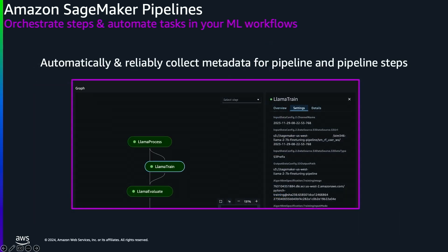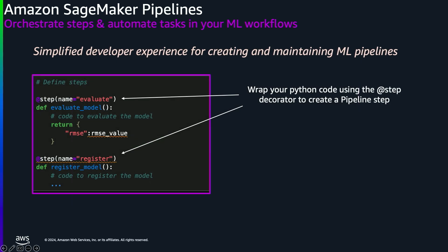Pipelines can be visualized within Studio, and incorporating fine-tuning steps into a pipeline workflow allows SageMaker Pipelines to reliably capture key metadata about not only the pipeline itself but also the steps within it. One key benefit is the more recent release of our simplified developer experience for pipelines, which enables developers to more easily create pipelines through the use of a new step decorator. This allows you to wrap your Python function code using the step decorator and have pipelines automatically convert that into a step within your pipeline. You can either let pipelines infer the step order based on dependencies, or you can also explicitly highlight dependencies between steps.